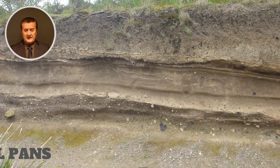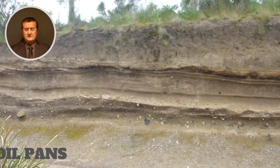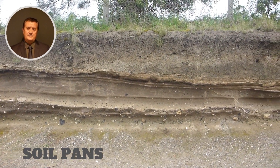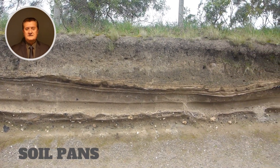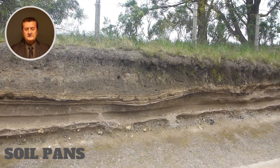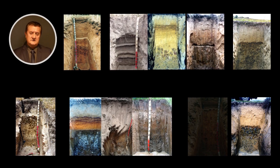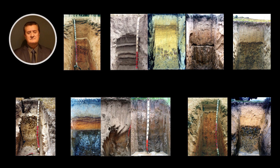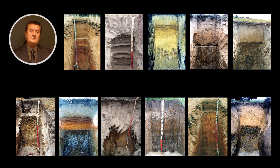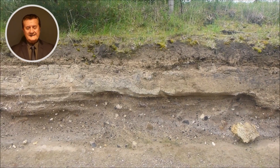Soil pans are special formations that can vary extremely in their properties, and the possibility to eliminate their adverse effects on land use and management also varies according to their characteristics. To know which is which, we gave them different names such as plow pan, clay pan, density pan, hard pan, fragipan, iron pan, ferricrete, calcrete, etc.